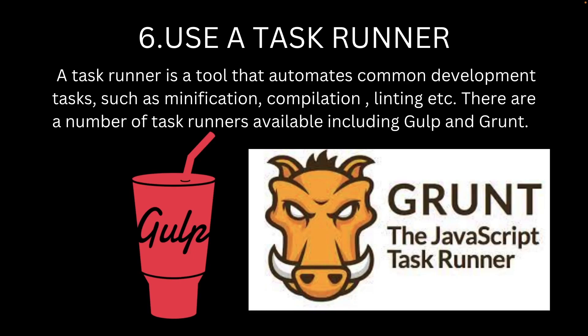Number 6: Use a task runner. A task runner is a tool that automates common development tasks such as minification, compilation, linting, and more. There are a number of task runners available, including Gulp and Grunt.